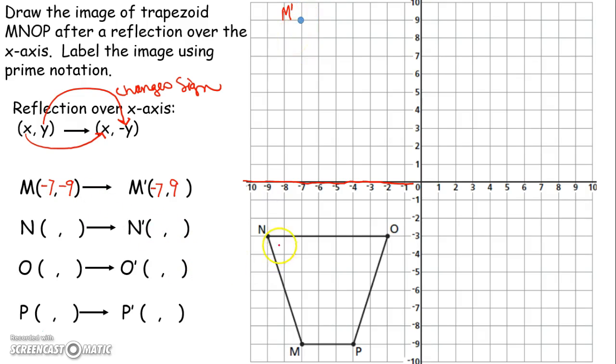Let's go ahead and take a look at point N. Point N is negative 9, negative 3. Negative 9, negative 3. So what will N prime become? Well, when we reflect over the x-axis, the x-coordinate stays the same. So if it was negative 9, it remains negative 9. And the y-coordinate changes sign. So if it had been a negative 3, we go ahead and make it a positive 3.